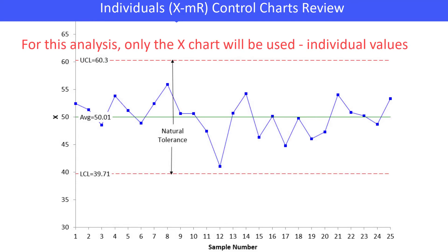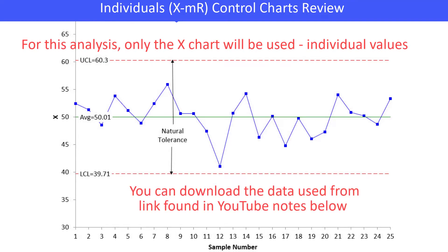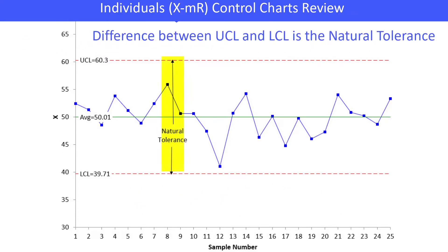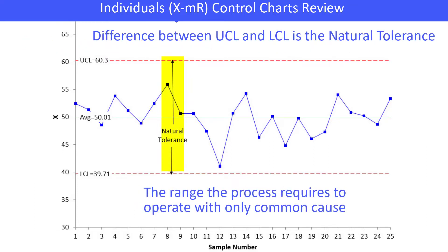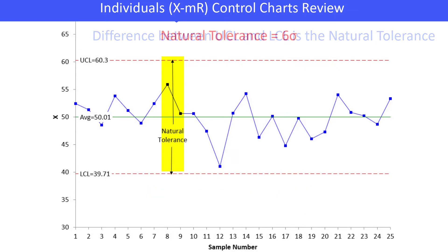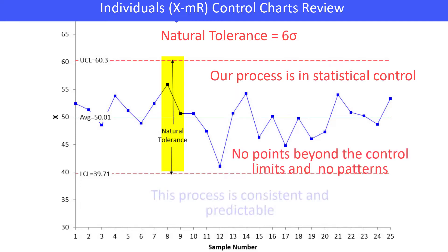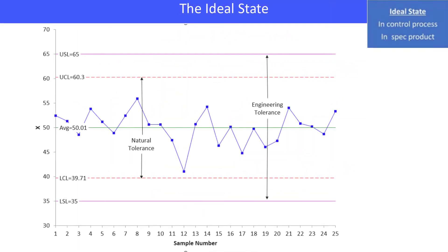Now we're going to be using our next chart for our analysis. You can download the data used from the link in the YouTube notes below. The difference between the upper control limit and the lower control limit is what we're going to call a natural tolerance — that's the range the process operates in. Our process here is in control: no points beyond the limits and no patterns. This process is consistent and predictable as it operates within its natural tolerance.